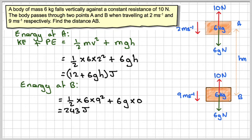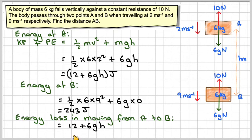And that energy loss is due to the work done by this force moving this distance. So that's going to be 12 plus 6gh minus 243. Simplifying that becomes 6gh minus 231, so 6gh minus 231 joules.